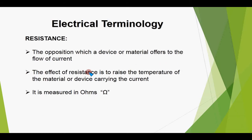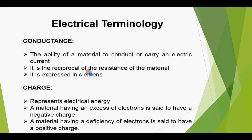Resistance is the opposition which a device or material offers to the flow of current. The effect of resistance is to raise the temperature of the material or device carrying the current. It is measured in ohms. Devices used in PCBs (printed circuit boards) to offer resistance are called resistors, and they come in different types and values with different properties.